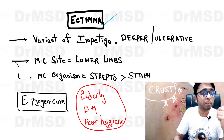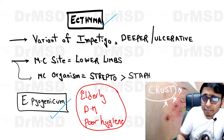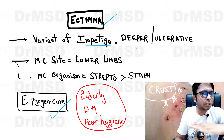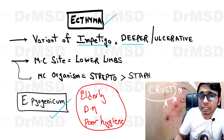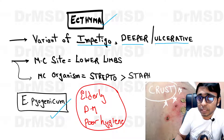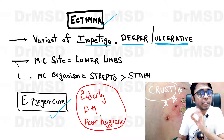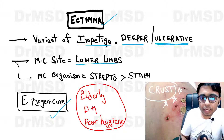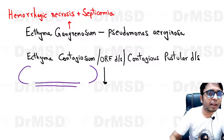Ecthema is of three types. Ecthema pyogenicum is a bacterial infection and is actually a variant of impetigo itself, but unlike impetigo — where involvement is only up to the epidermis — here it goes a little deeper, involving the dermis. Because of this, the lesions heal with ulceration. The most common site for ecthema pyogenicum is the lower limbs, and the most common organism is Streptococcus rather than Staphylococcus.